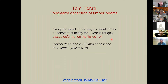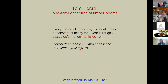Another study found that creep in wood under low constant stress at constant humidity for one year is roughly 1.4 times the elastic deformation. Applying that to our violin measurements of 0.2–0.4 mm initial deflection, after a year we'd be approaching 0.3 mm or more, and there's a sense it might double in ten years.